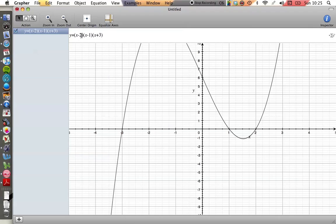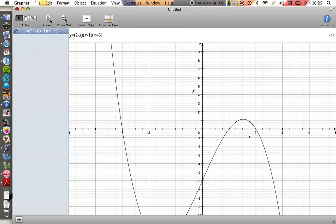Well if we write one of the factors, it doesn't matter which one, in reverse, then the graph flips over. Why is that? Well that's because what we've done by writing this the other way is we've introduced an additional factor of minus 1.